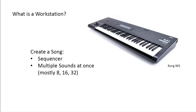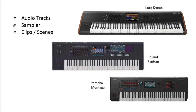Back then you had a MIDI sequencer and you could have multiple tracks, meaning you could play multiple sounds in parallel - mostly 8, 16, or on the most powerful ones even 32. These devices still exist nowadays; you have the big ones like the Korg Kronos, Roland Phantom, Yamaha Montage, and they can now do much more - full audio tracks, sampler clips, and scenes.